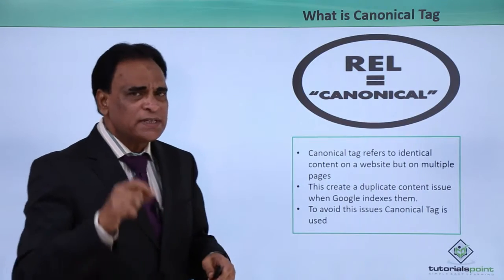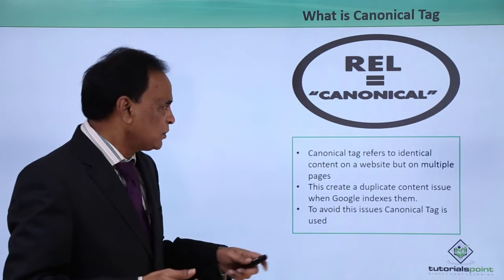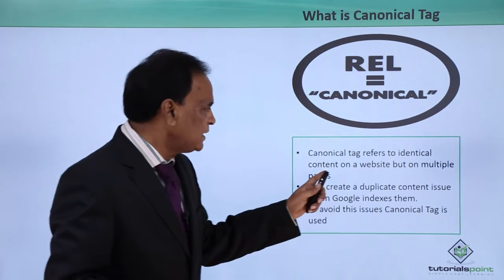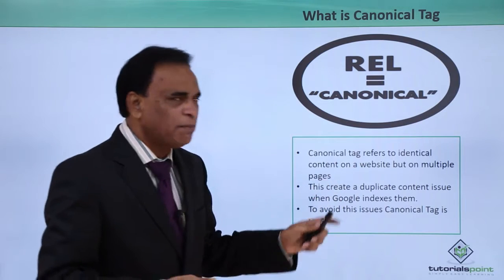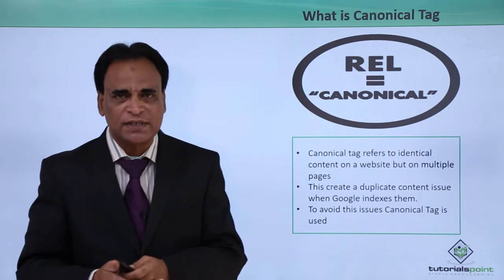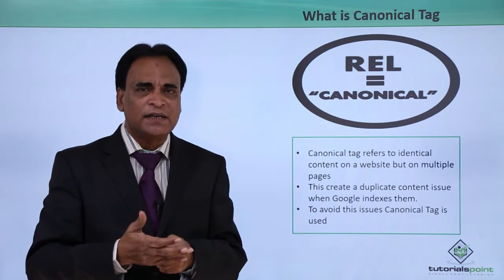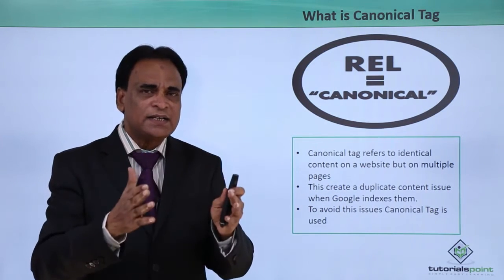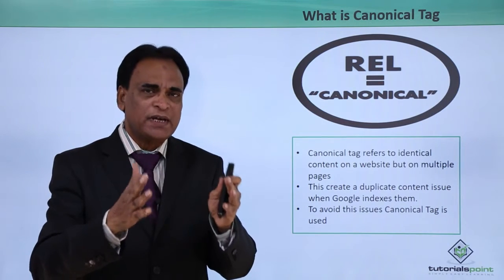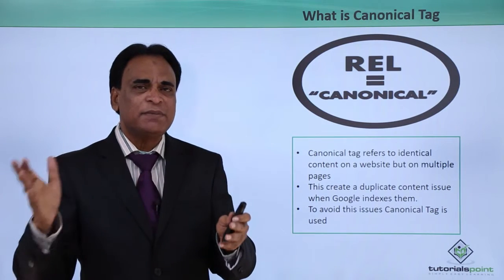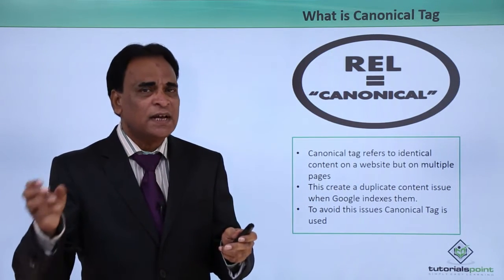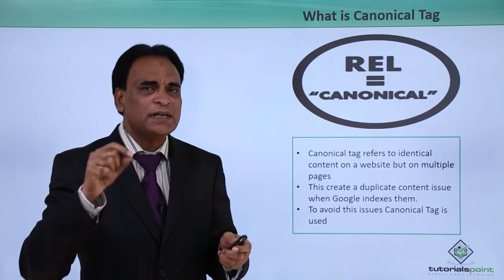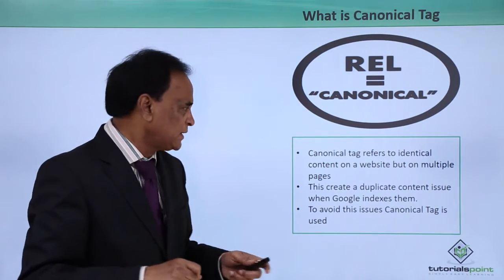What is the Canonical Tag all about? The Canonical Tag refers to identical content on a website that exists on multiple pages. You may have a website where content on a particular page is similar to content on other pages, and that creates duplicate content issues on the website.